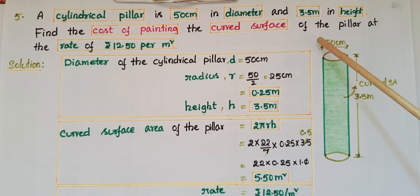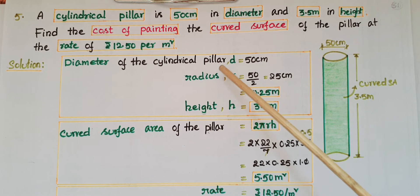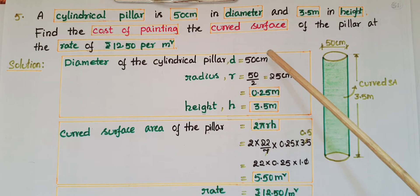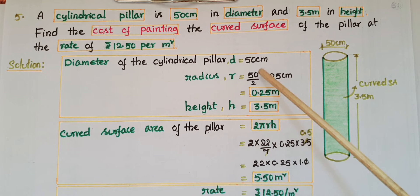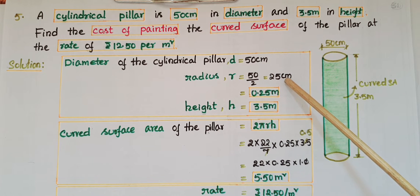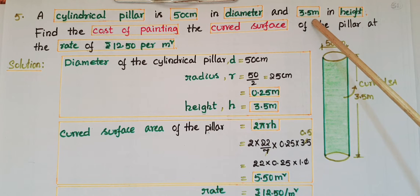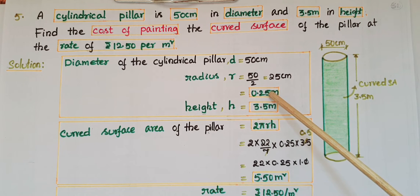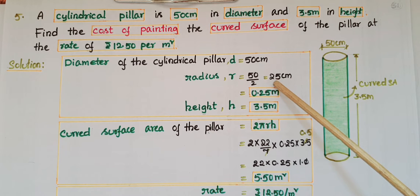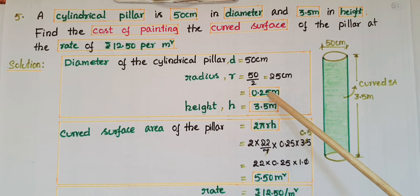Here, the cylindrical pillar diameter is 50 centimeters. The radius r equals diameter by 2, that is 50 by 2, which equals 25 centimeters. Since the height is 3.5 meters, we convert this radius value to meters: 25 by 100 equals 0.25 meters. So radius is 0.25 meters and height is 3.5 meters.